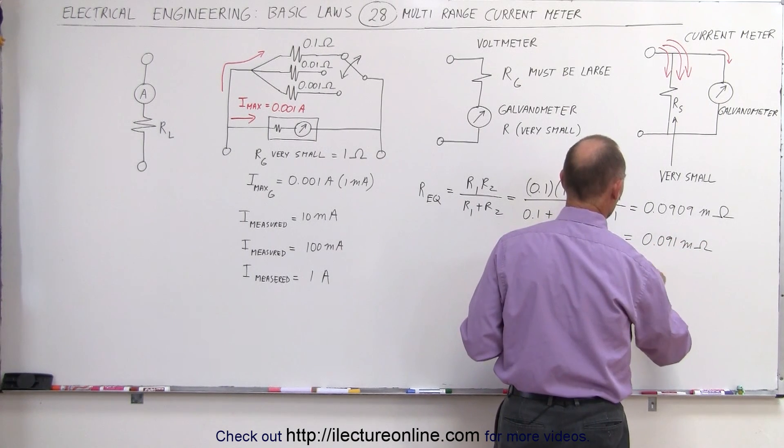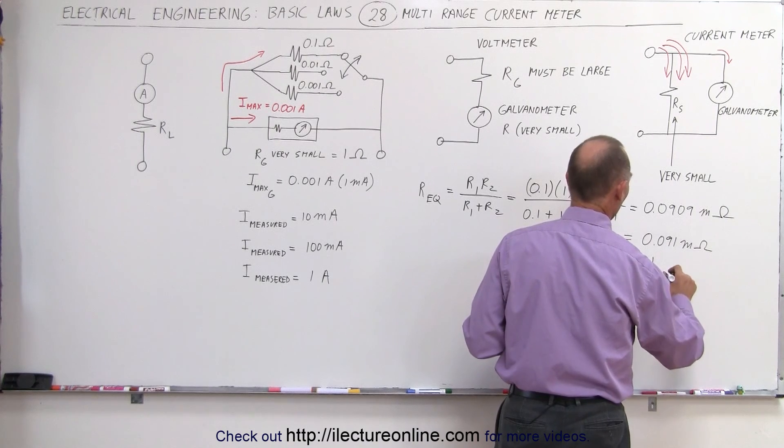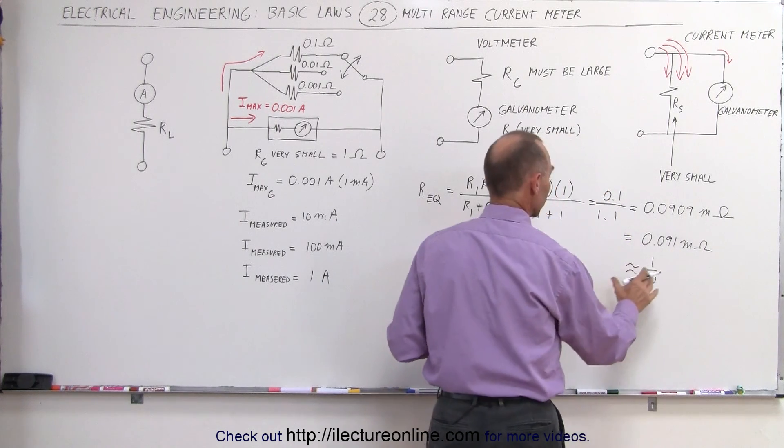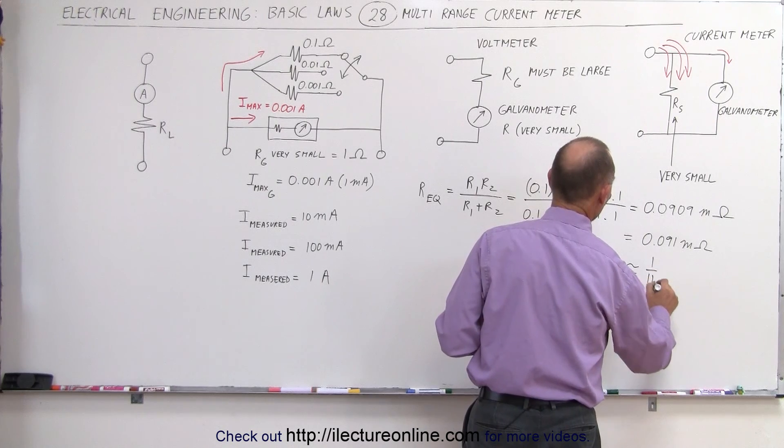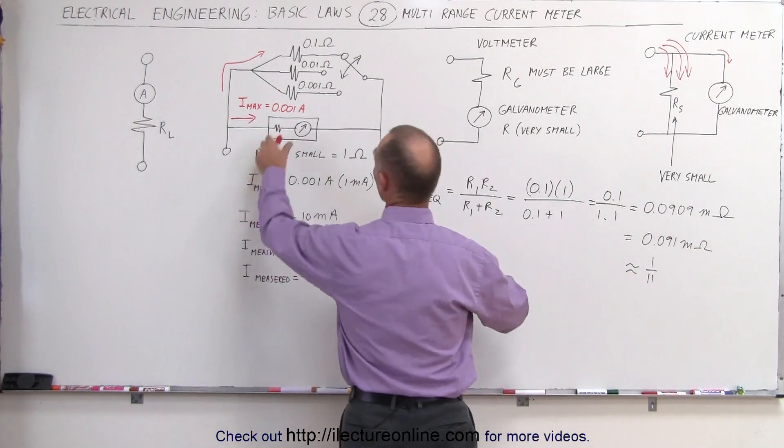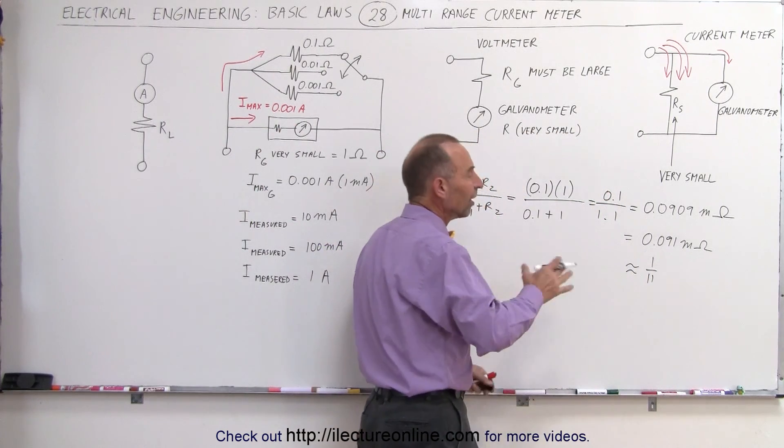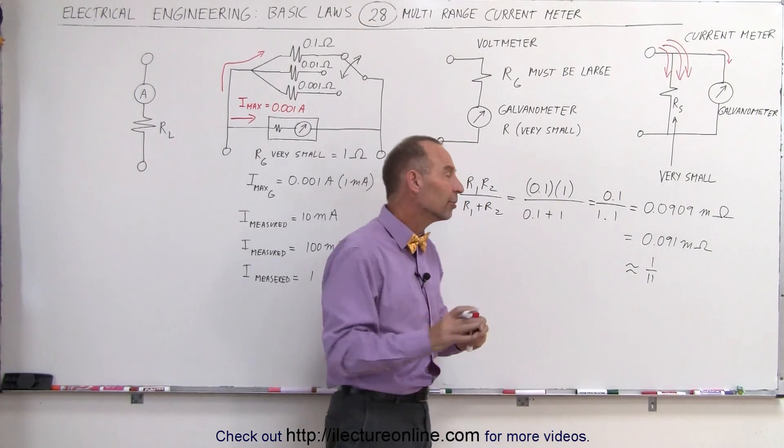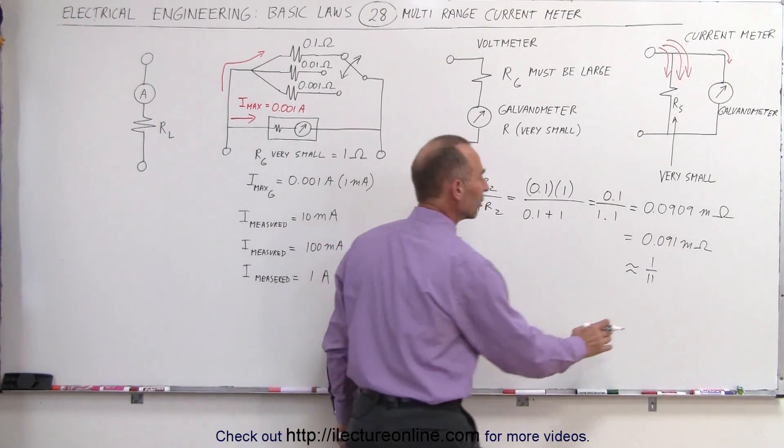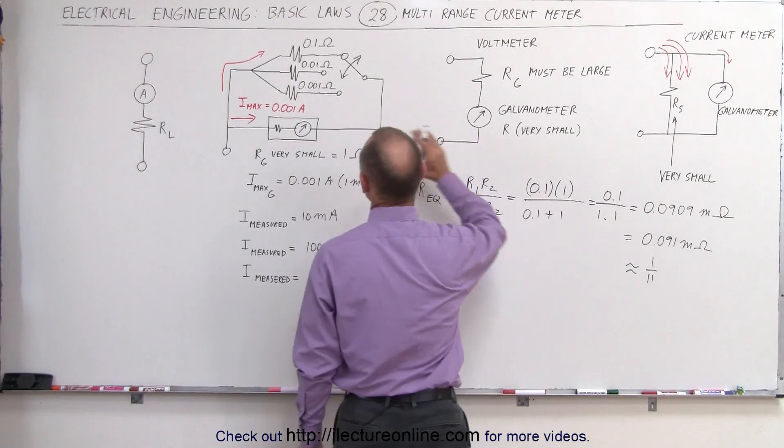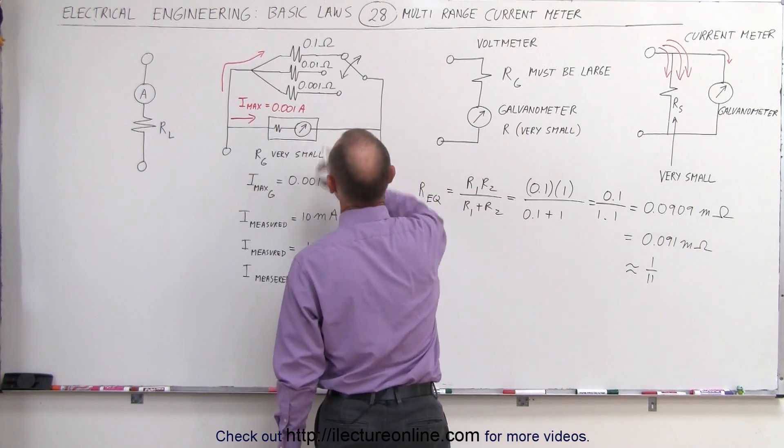Which is about one-tenth of the original, which is about one-tenth or actually about one-eleventh of the original resistance of the galvanometer. It's not quite one-tenth, so that's why I say we need to be a little bit careful here, it's approximately one-tenth of the original resistance.